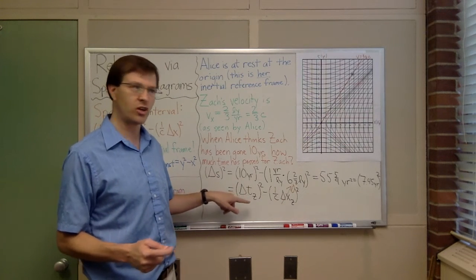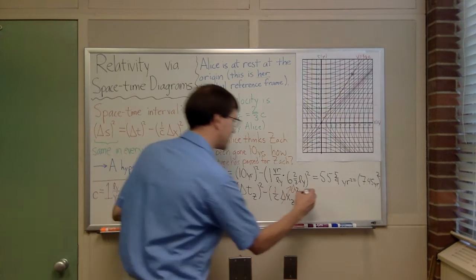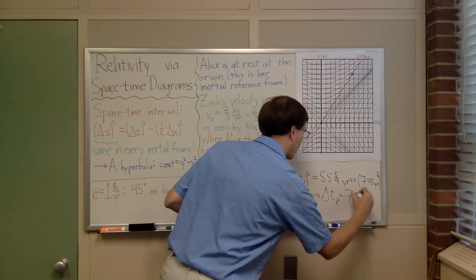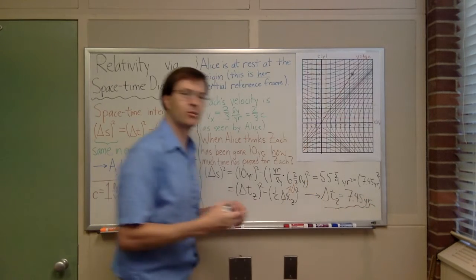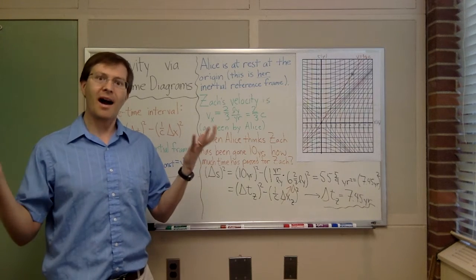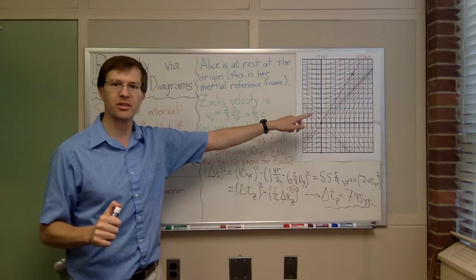That tells me that Zach's delta t squared, Zach's measurement of the time interval between the two events, is exactly the spacetime interval itself. That's almost a defining feature. If you're present at both events and you're an inertial observer, you're measuring spacetime interval. So that means that delta t Zach is 7.45 years. That's the result that we come up with using the equations.